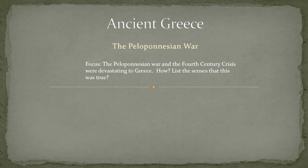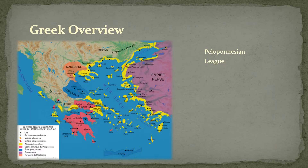Welcome back everybody. Today we're continuing with ancient Greece, and today's subject is going to be the Peloponnesian War, and the crisis of the fourth century. We're going to look at these two critical events in Greek history. I'd like you to focus on how the Peloponnesian War and the fourth century crisis were devastating to Greece — list the senses in which this was true.